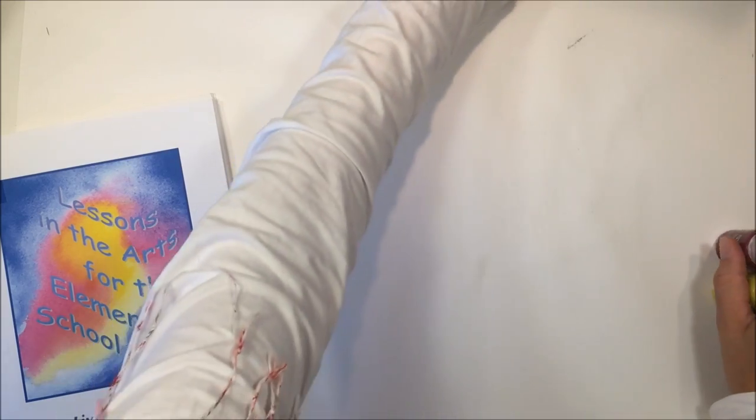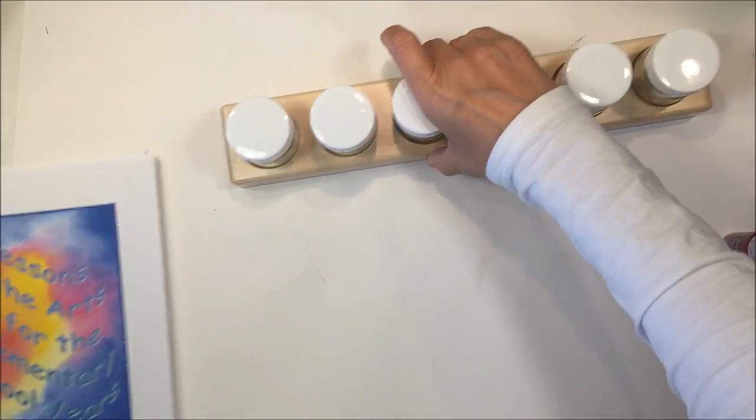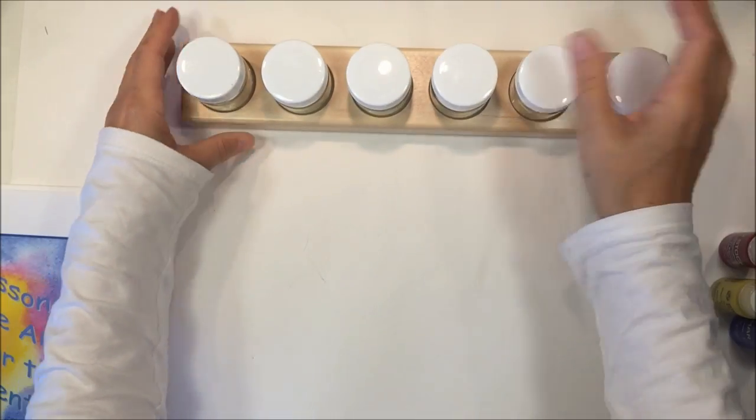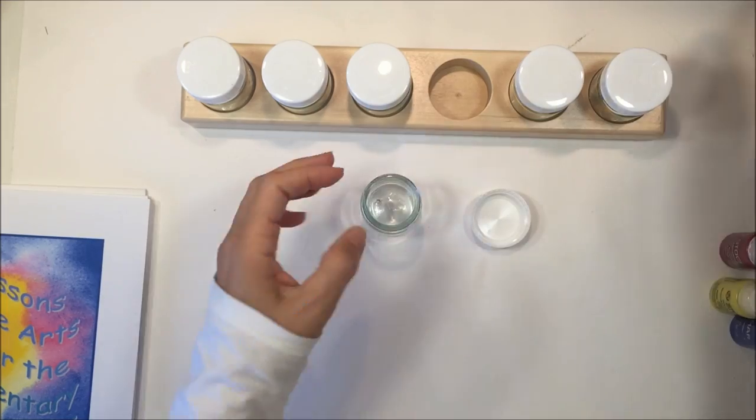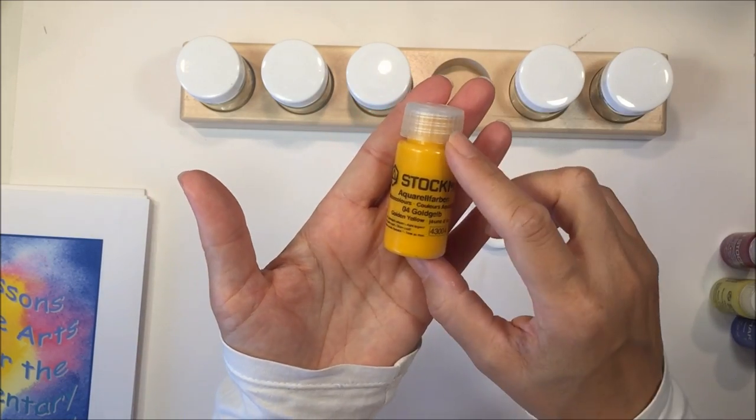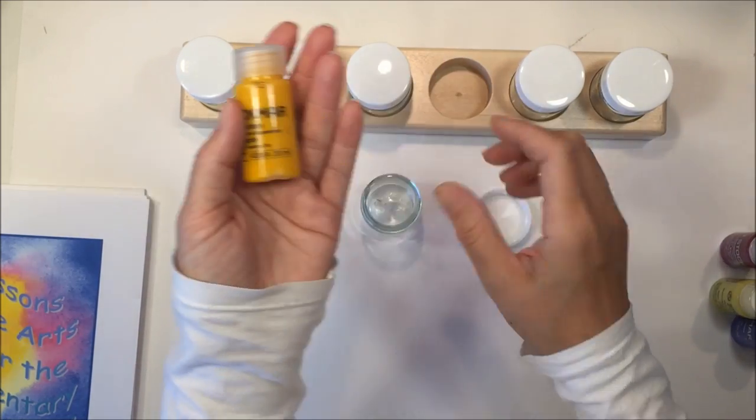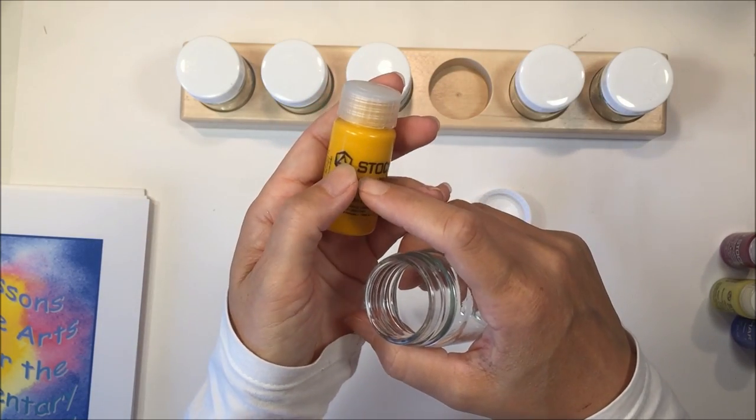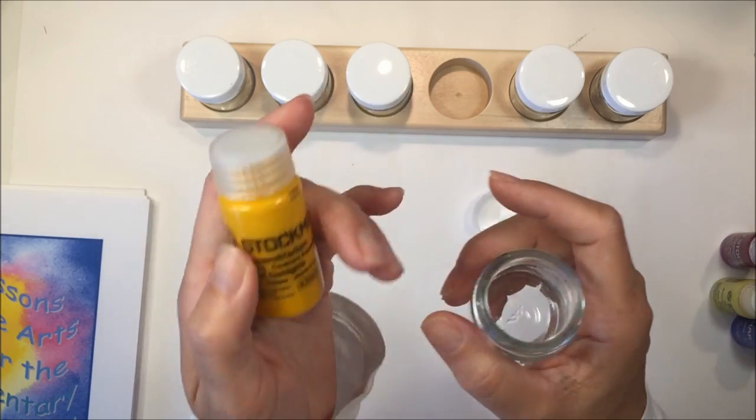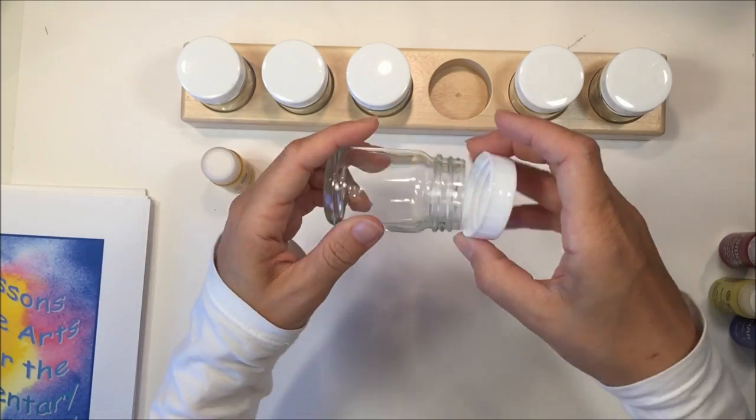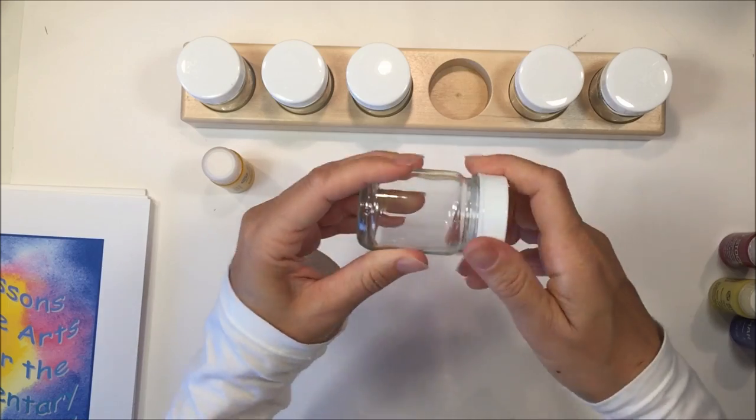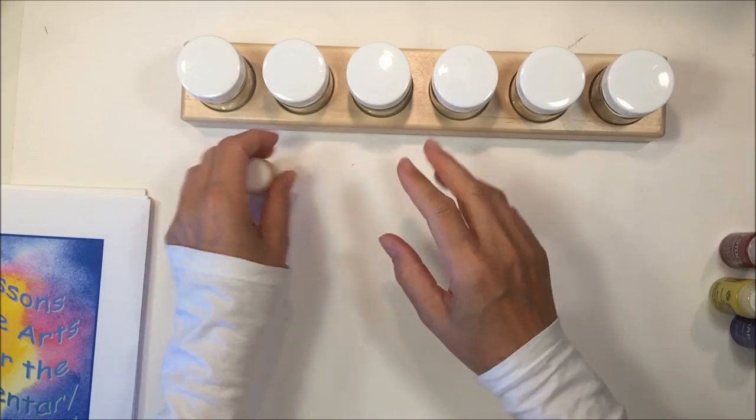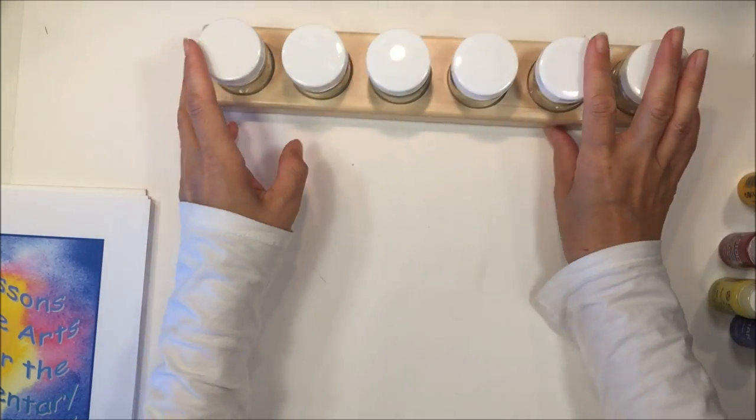One thing that I found really useful in working with the watercolors is getting a little jar set like this. These have the screw on lids. You can mix your color. This is concentrated. This will last you a really long time. You just need a little bit of it and then you add water. You can change the intensity of the color by how much of the concentrated watercolor you add to your water. What's great about these is that you can screw them shut. They won't leak. They won't tip over.